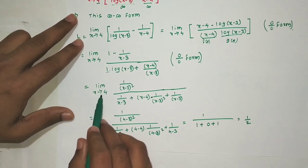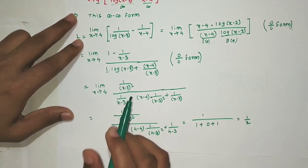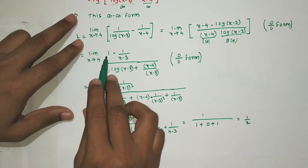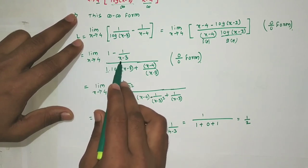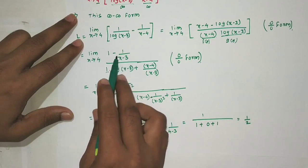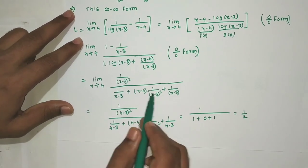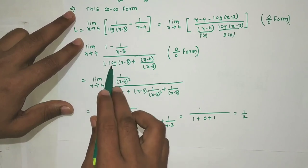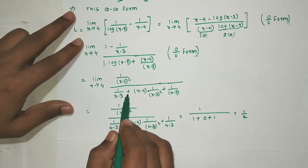Second application of L'Hôpital's rule: derivative of (1 - 1/(x-3)) is 1/(x-3)². For the denominator, we differentiate [(x-4)/(x-3) + log(x-3)] using the product rule on the first term.